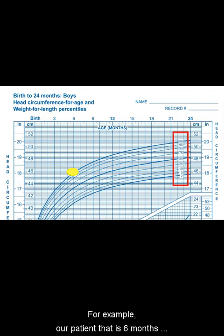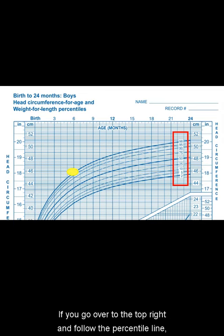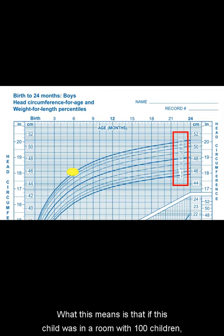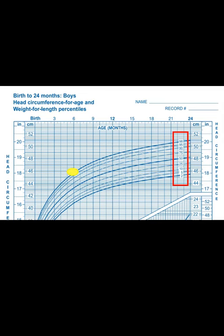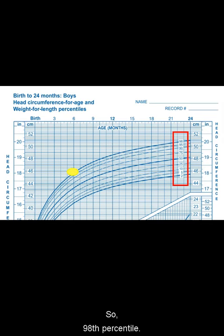For example, our patient is 6 months old with a head circumference of 18 inches. If you go over to the top right and follow the percentile line, you will see that the patient is in approximately the 98th percentile. What this means is that if this child was in a room with 100 children, this child's head circumference would be larger than 98 of the children in the room — so 98th percentile.